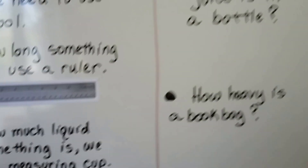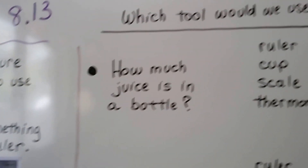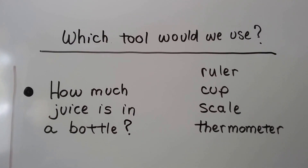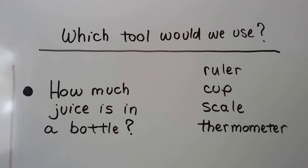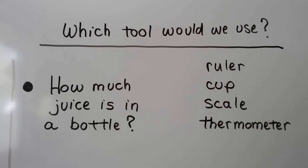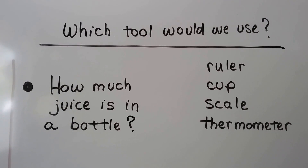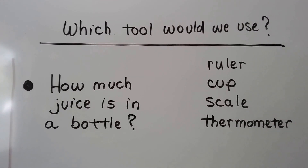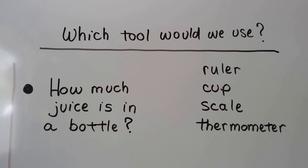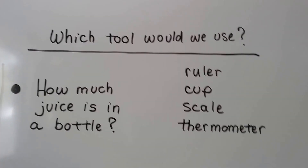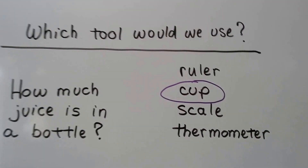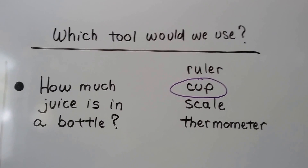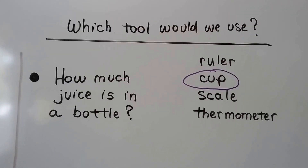So let's see which tool would we use. If we wanted to know how much juice is in a bottle, would we use a ruler, a cup, a scale, or a thermometer? If you said cup, you're right, because that would be liquid volume — the capacity in liquid volume.